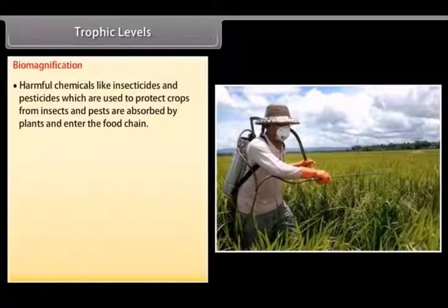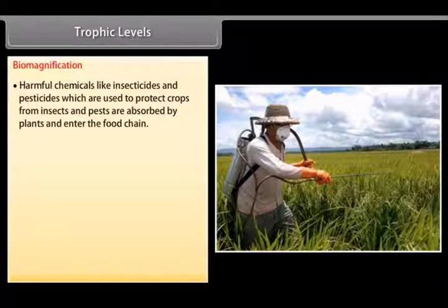Biomagnification. Harmful chemicals like insecticides and pesticides, which are used to protect crops from insects and pests, are absorbed by plants and enter the food chain.